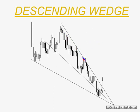You have a descending wedge here, and the conventional wisdom says once we break up above this line, we can have a nice move to the upside — really stopping the downtrend — and things should be going very strongly to the upside, giving you a nice upward bias.